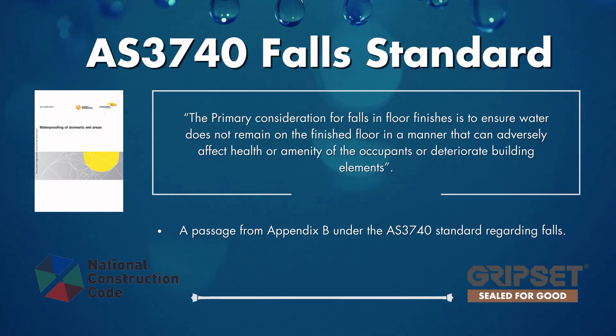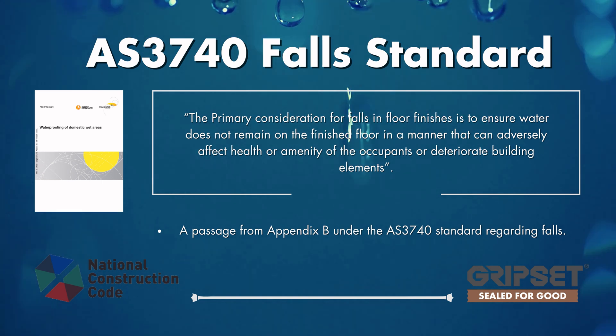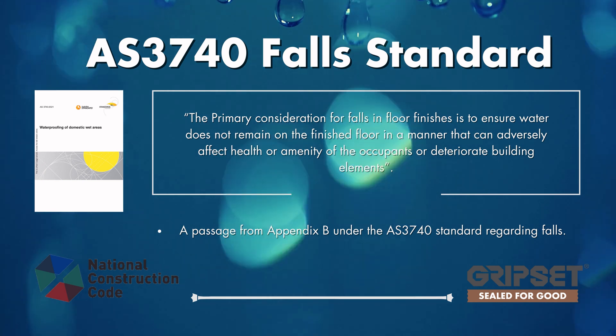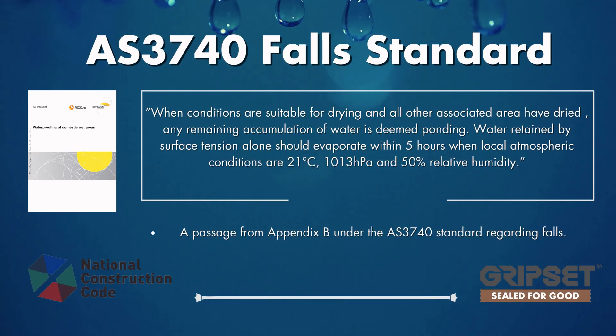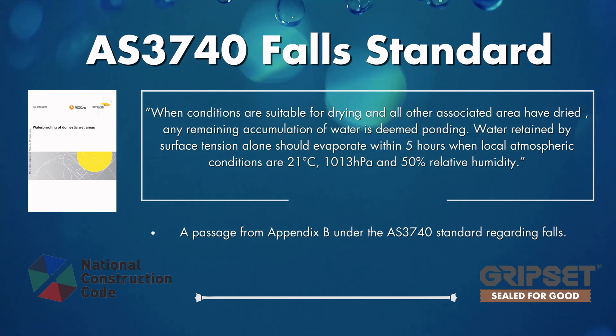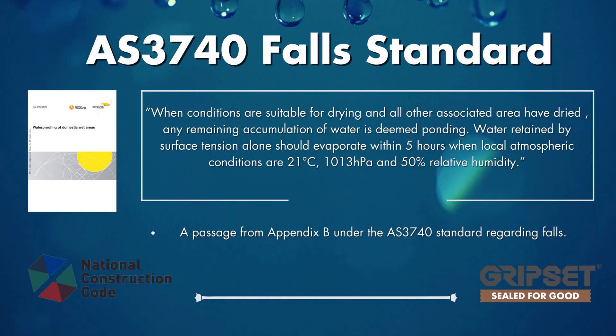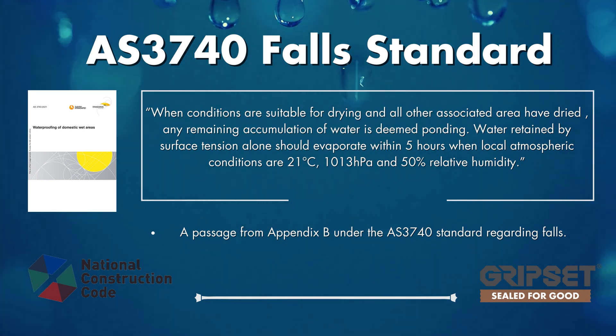In today's episode we're going to be focusing on surface falls, as it represents some of the biggest changes to this new version of the standard. It really is a rethink and redefining of waterproofing design and installation requirements. From Appendix B: the primary consideration for falls in floor finishes is to ensure water does not remain on the finished floor in a manner that can adversely affect health and amenity of occupants or deteriorate building elements — in other words, using falls to prevent ponding. Ponding is defined as: when conditions are suitable for drying and all other associated areas have dried, any remaining accumulation of water is deemed ponding. Water retained by surface tension alone should evaporate within five hours at 21 degrees Celsius and 50% relative humidity.